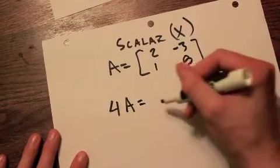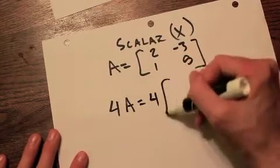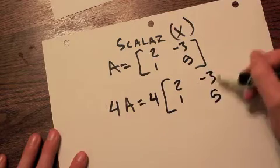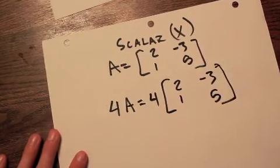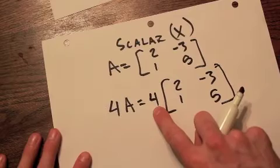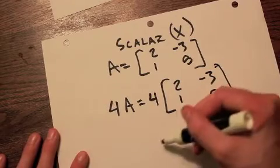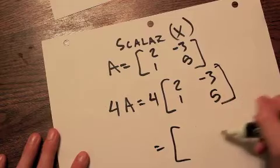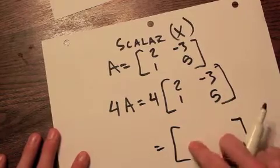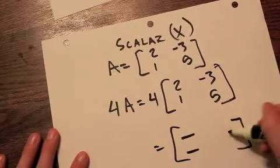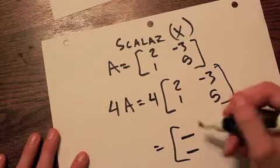Well that means I want to take four and multiply it by this matrix. Well that means to take four and multiply it by each position in here. So your answer is also going to be a two by two matrix. In the one one position, I will have four times two, which is eight.